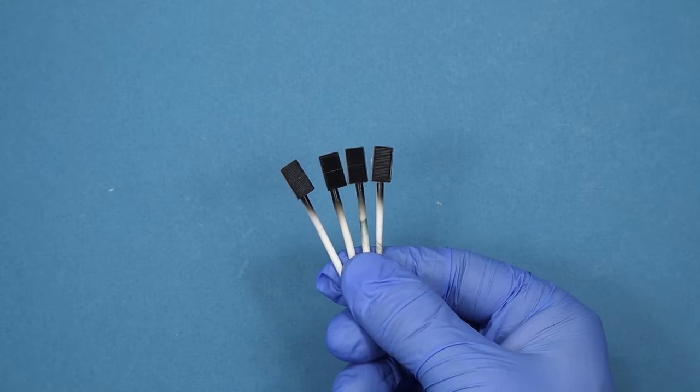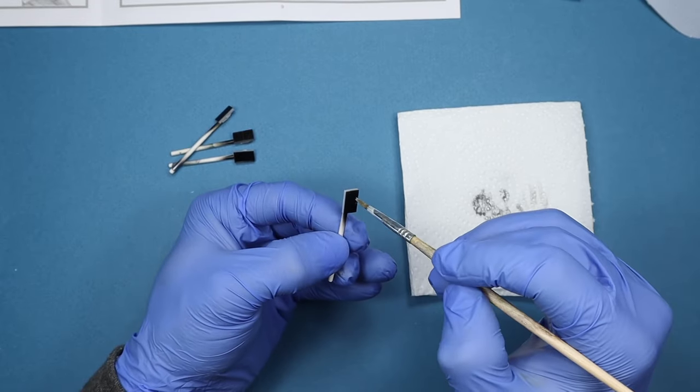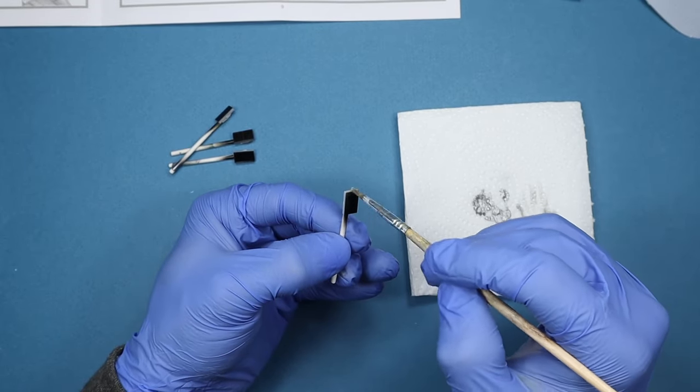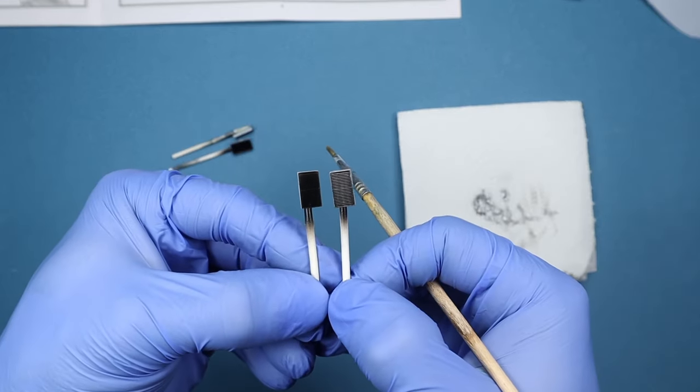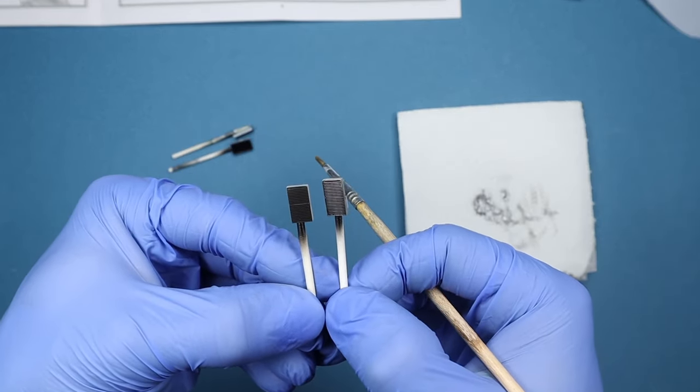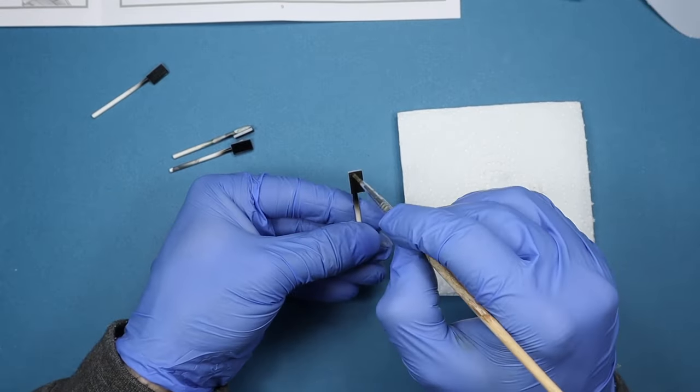Once they're painted black, we can use the dry brushing technique to give them a little bit of life and bring out the textured grill. I'm using the same brush and paint as we did on the cockpit. Simply put the paint on the brush, wipe it off, then lightly pass the brush over the part and the silver paint will be left on the raised areas, highlighting the details. At this point you could also add a wash or any other weathering techniques you'd like.